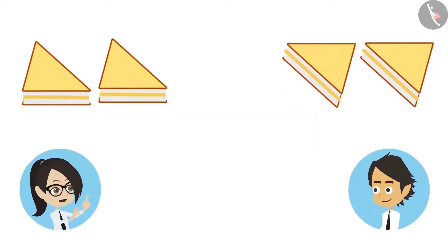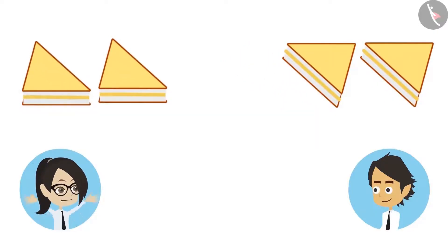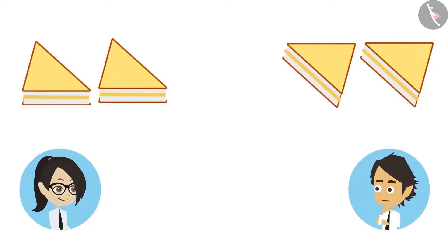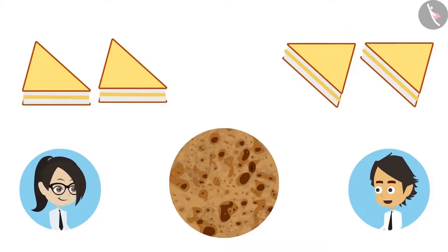Now look, I have two sandwiches and you too have two sandwiches. Yes, now I have half of your sandwich. But we could count the sandwiches and find the number of halves. But I have only one paratha. How will we divide it into two halves?